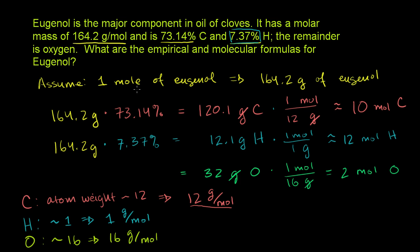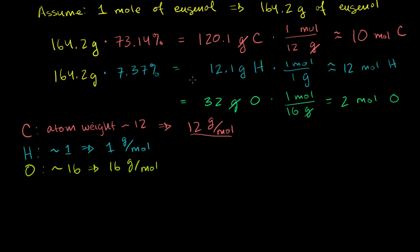So if we have 1 mole of eugenol, we have 10 moles of carbon, 12 moles of hydrogen, and 2 moles of oxygen. We now have the ratio — or equivalently, if we had 1 molecule of eugenol, it would contain 10 carbons, 12 hydrogens, and 2 oxygens. This is the molecular formula: C₁₀H₁₂O₂.